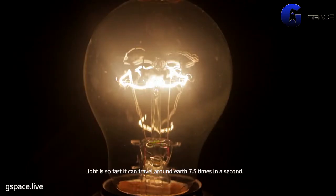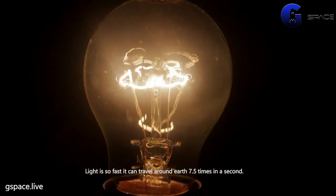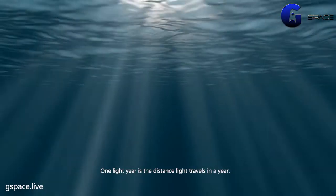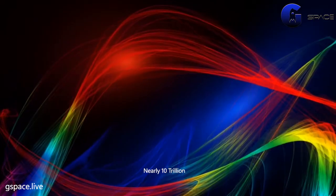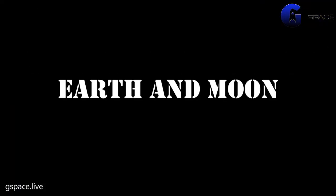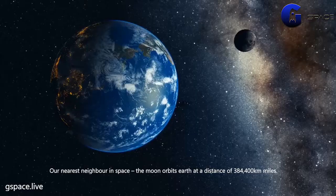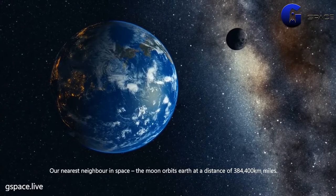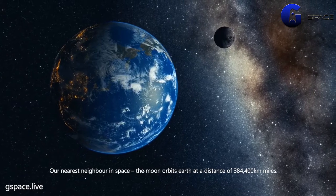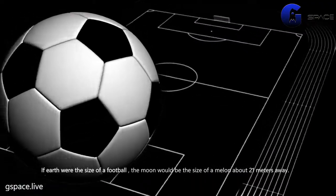Light is so fast it can travel around Earth 7.5 times in a second. One light year is the distance light travels in a year - nearly 10 trillion kilometers. Earth and Moon: Earth is 12,756 kilometers wide. Our nearest neighbor in space, the moon, orbits Earth at a distance of 384,400 kilometers. If Earth were the size of a football, the moon would be the size of a melon about 21 meters away.